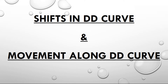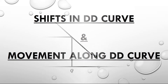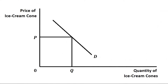Hello students, today's topic is shifts in demand curve and movement along demand curve. Here we have this basic structure: on the vertical axis we have taken price of ice cream cone and on the horizontal axis we have taken quantity of ice cream cones. Initial price is OP and initial quantity is OQ.